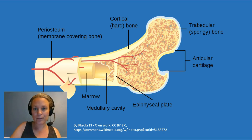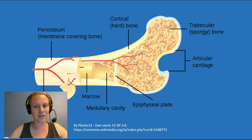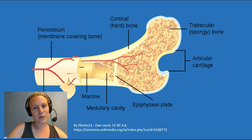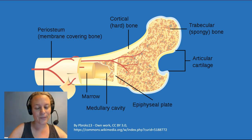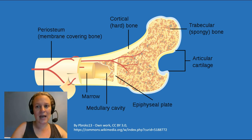We also have trabecular or spongy bone that people don't think about as often. Trabecular or spongy bone is where the marrow is. There are two different types of marrow: yellow and red. The yellow marrow is essentially fat storage, and the red marrow is where hematopoiesis takes place. Hematopoiesis is when we make new blood cells — we can actually make up to a trillion of those every single day, which is really amazing to think about.